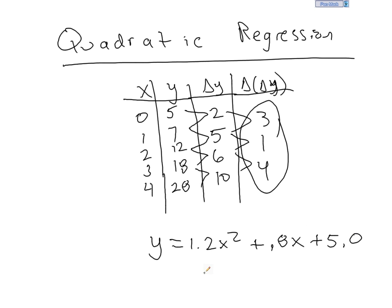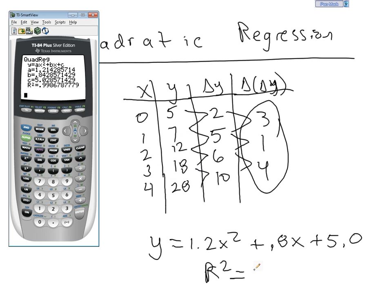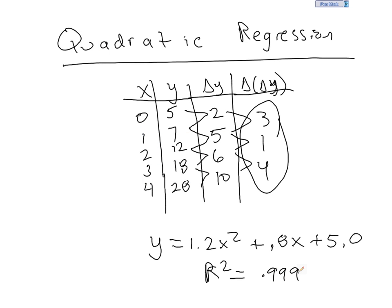Now we can do all the interpretations that we need. R squared, in this case it uses a capital. Don't worry about that. 0.999, if we rounded it.